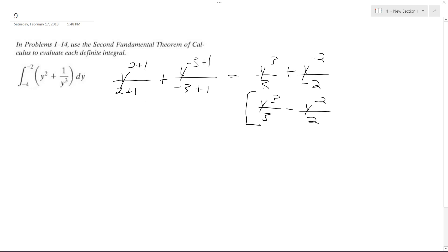So I'm then integrating this from negative four to negative two, and we work left to right. So negative four cubed over three minus negative four raised to the negative two. I'm going to rewrite this as one over two negative four squared.